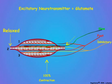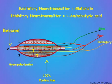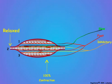Some muscle fibers are also innervated by inhibitory neurons that block the stimulatory effects of both the fast and the slow neurons. Inhibitory neurons release gamma-aminobutyric acid as their neurotransmitter chemical. Gamma-aminobutyric acid hyperpolarizes the fiber membrane to neutralize the depolarizing action of glutamate released by the stimulatory neurons.